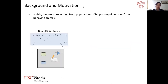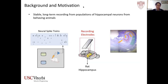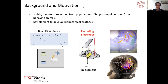Collecting stable long-term recordings from populations of hippocampal neurons in behaving animals is the foundation for understanding the mechanisms behind memory formation, and is also essential to investigate hippocampal function. A recording electrode that can collect stable neural activities from all three subregions over a long period is needed. Such a device is also a key element for the development of hippocampal prostheses.